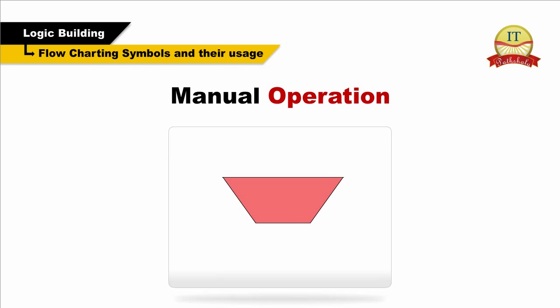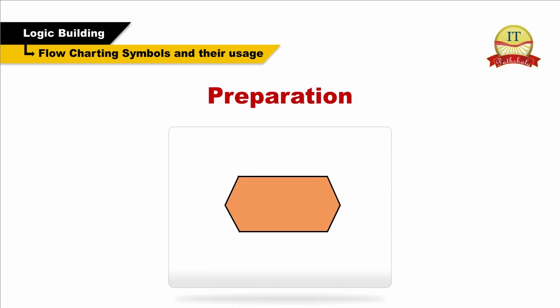Manual operation. The trapezoid shape represents a manual operation, that is, any operation or adjustment that has to be done by hand rather than by a machine or automatically. Preparation box. This shape is used to differentiate between steps that prepare for work versus steps that actually do the work.